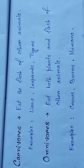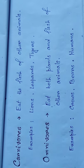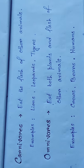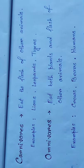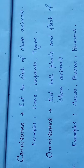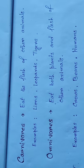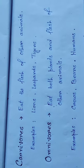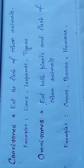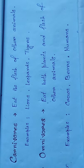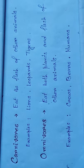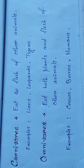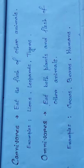Next is Omnivorous. Animals like bear, crow and rat eat both animals and plants. Such animals are called omnivorous animals. We humans also eat both plants and flesh of other animals, so we are also omnivorous.